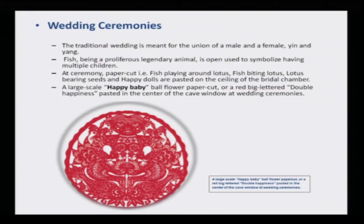Wedding ceremonies — a wedding is the union of a male and female, which in China they call yin and yang. Fish is considered a pro-life auspicious animal and is used to symbolize having multiple children. During the wedding ceremony, they give a paper cut like the one shown on the screen, known as 'happy baby.' It means double wedding because it is the union of two persons, so they call it double happiness.